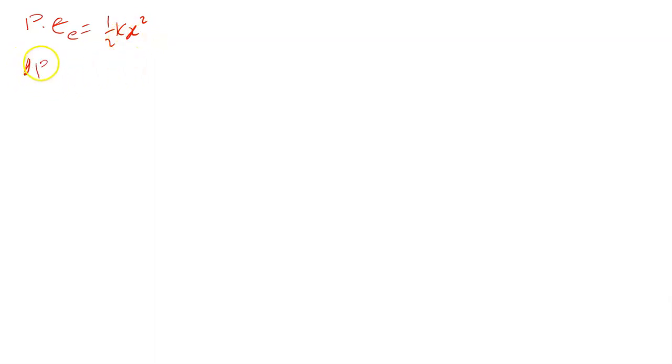If I say change in elastic potential energy, what I mean is I'm going to have a change in the extension. A change in the extension can be written as 1 over 2k, the final extension squared minus the initial extension squared.